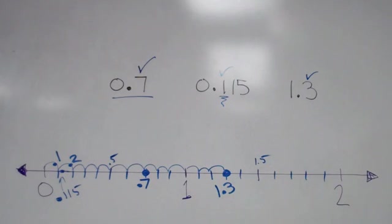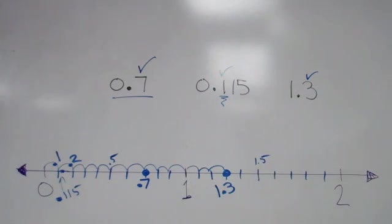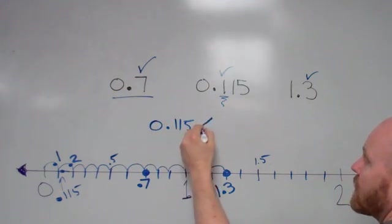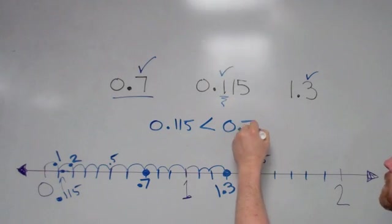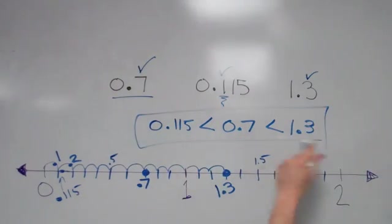And that's how we locate these three numbers on the number line, which also automatically tells us that if I were to put these from least to greatest, 0.115 is less than 0.7, which is less than 1.3. This is these three numbers in order from least to greatest.